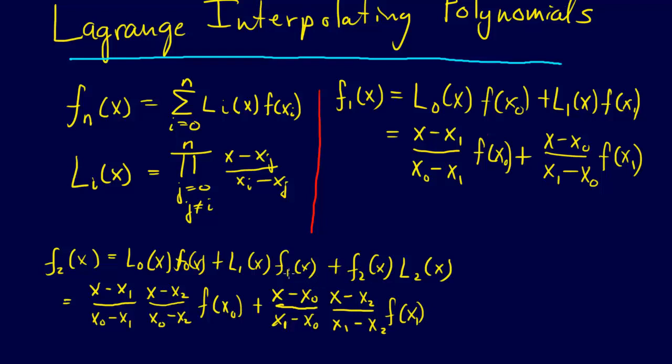I wrote all these down wrong. Not F naught of X, that is F of X naught. F of X naught, X1, X1, X2. Perfect.